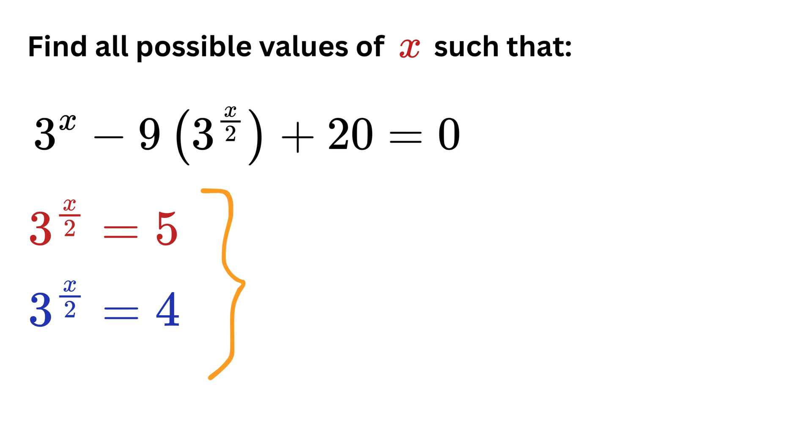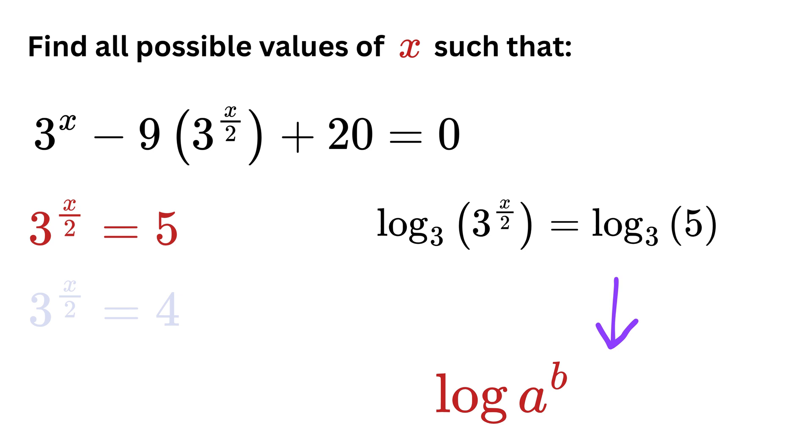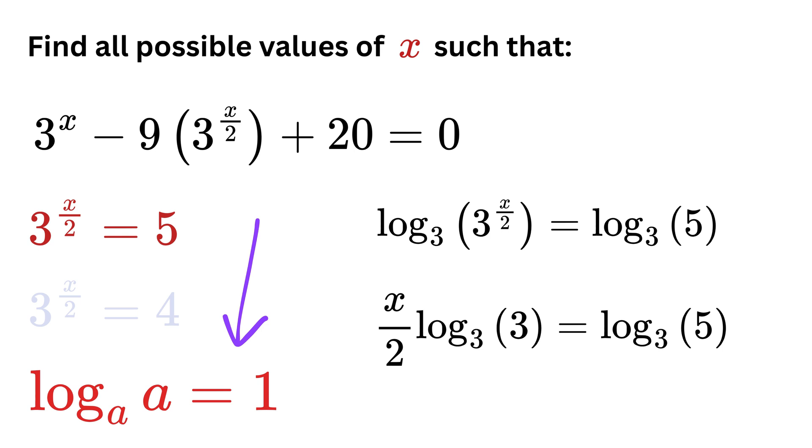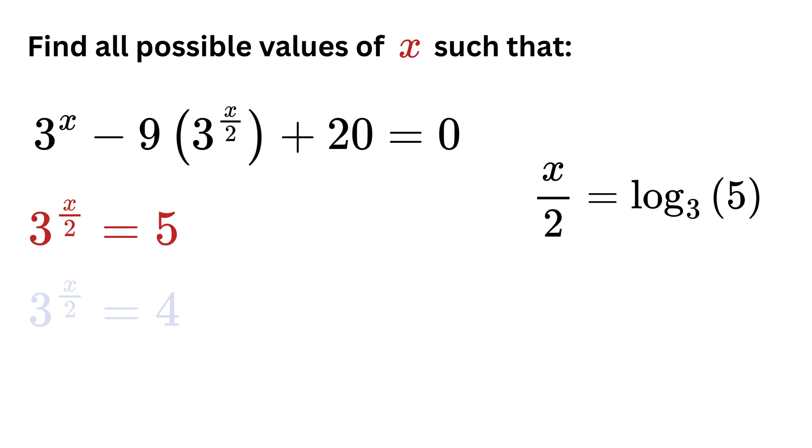This kind of question is exactly what a logarithm answers. For this case, take logarithm on both sides with base 3 to get log base 3 of 3 raised to x by 2 equals log base 3 of 5. Then use the logarithm rule where the log of a raised to b equals b times log of a, so we get x over 2 times log base 3 of 3 equals log base 3 of 5. Also, log of a with base a equals 1, so we are left with x over 2 equals log base 3 of 5. Now multiply both sides by 2 to solve for x, and we get x equals 2 times logarithm of 5 with base 3.